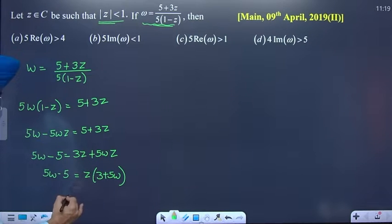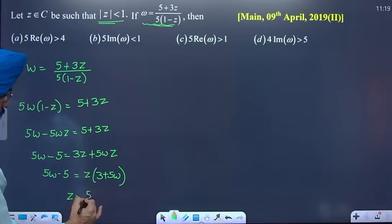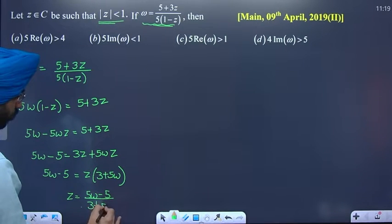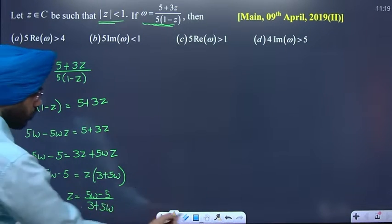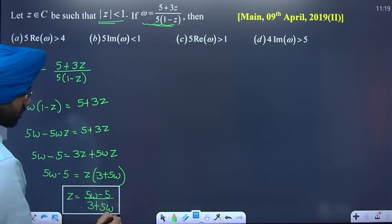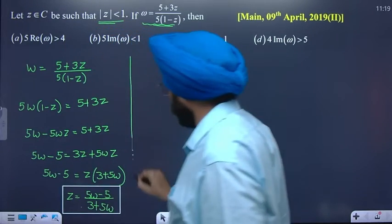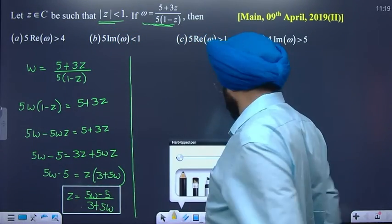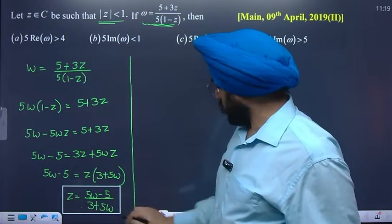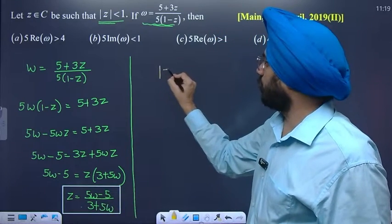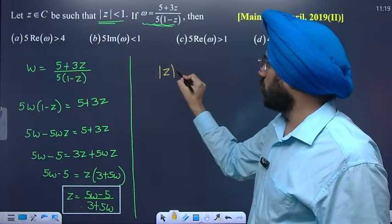The value of z will be (5w minus 5) divided by (3 plus 5w). Now, given that mod of z is less than 1, we apply modulus to this expression. We need to find the modulus of this number.